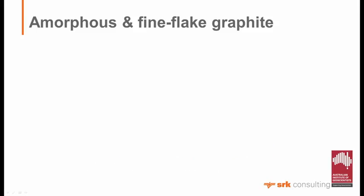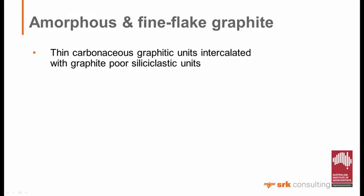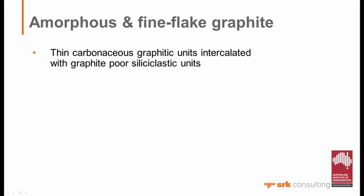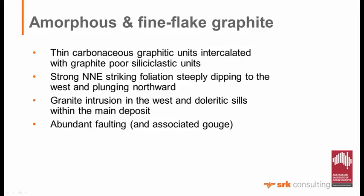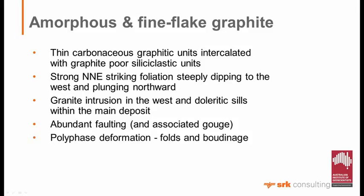This is what I think is an example of an amorphous fine flake graphite project. The geology consists of thin carbonaceous graphitic units intercalated with graphite-poor siliciclastic units. There is a strong north-northeast foliation, mainly dipping to the west with a northward plunge. To the west, there are granite intrusions which have added heat into the system, and there are also doleritic sills intruding the main deposit, along with dikes, which will affect eventual exploitation. There's abundant faulting and much fault gouge, with field evidence for polyphase deformation - at least three deformation events clearly seen in the field.